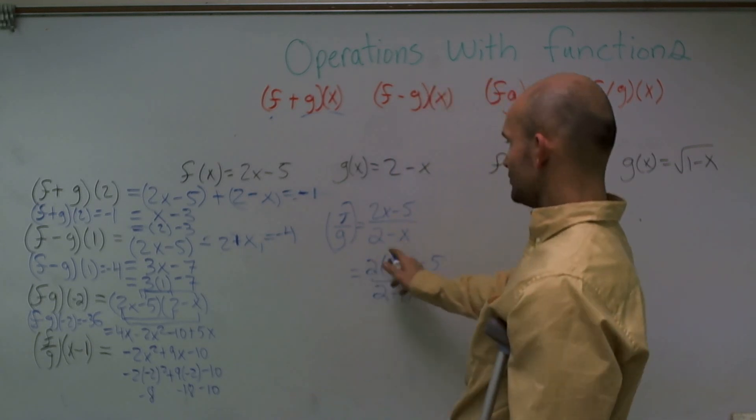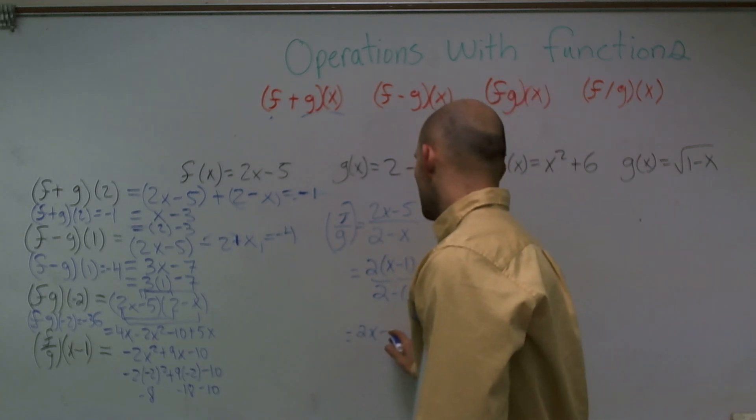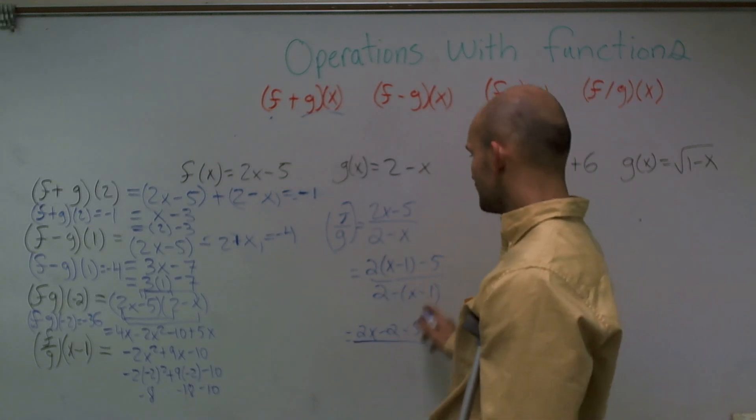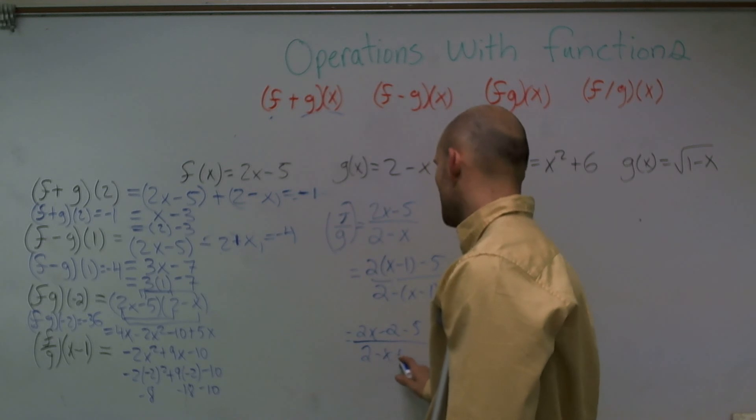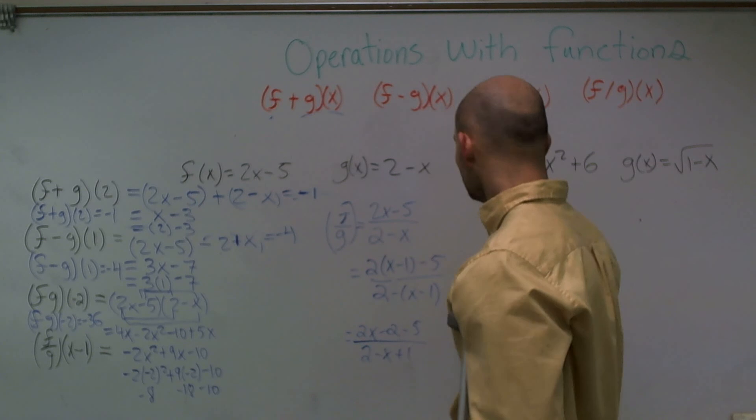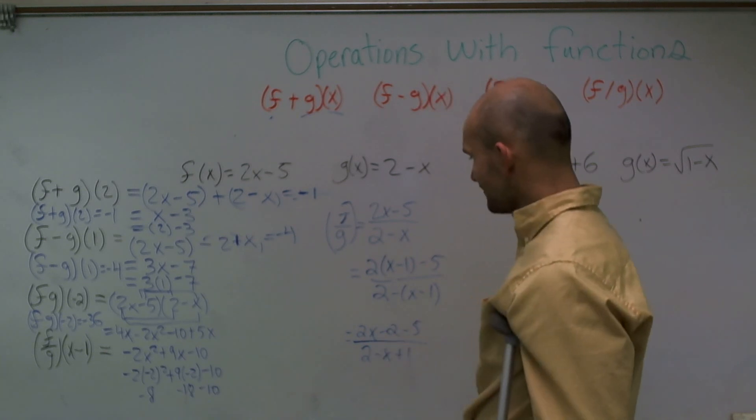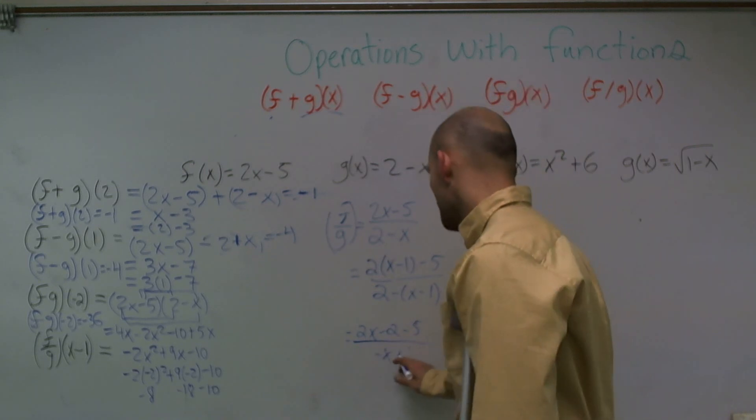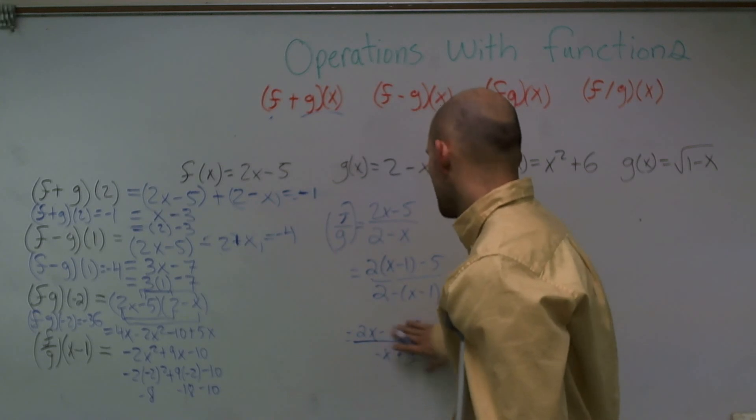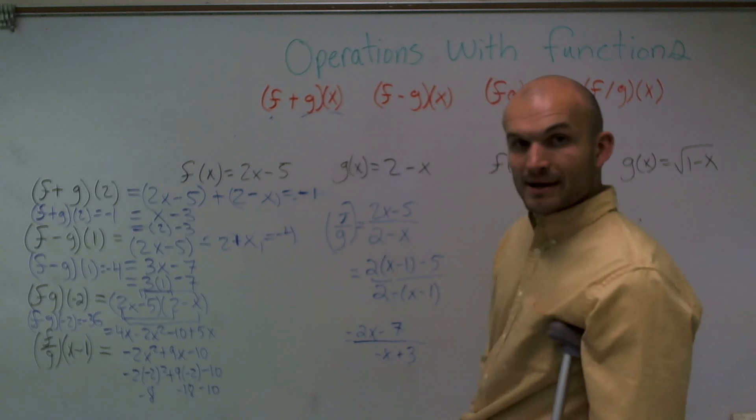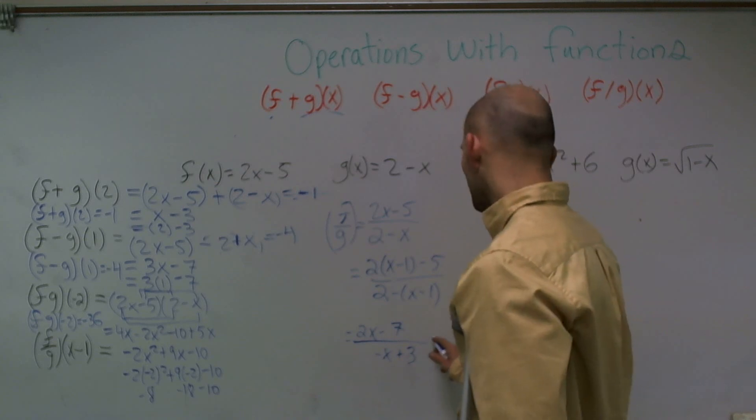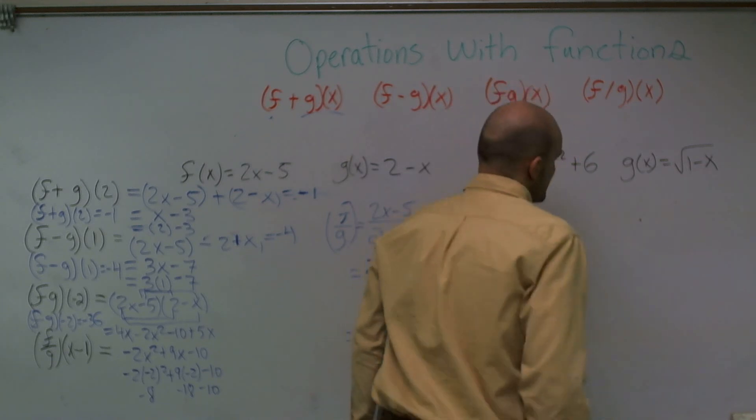So I simplify this. Now I use my distributive property. I'm left with 2x minus 2 minus 5 all over 2 minus x plus 1. I simplify this one more time, and I get 2x minus 7 and negative x plus 3. Therefore, now my domain has to be, or I'm sorry, my domain cannot equal 3. Okay? So just remember always to include your domain on that. All right.